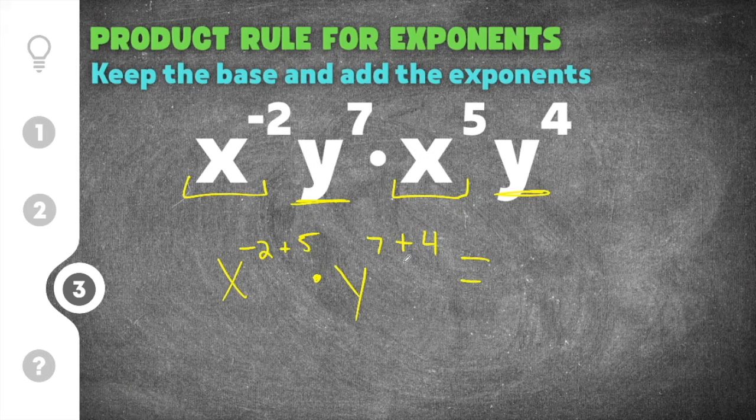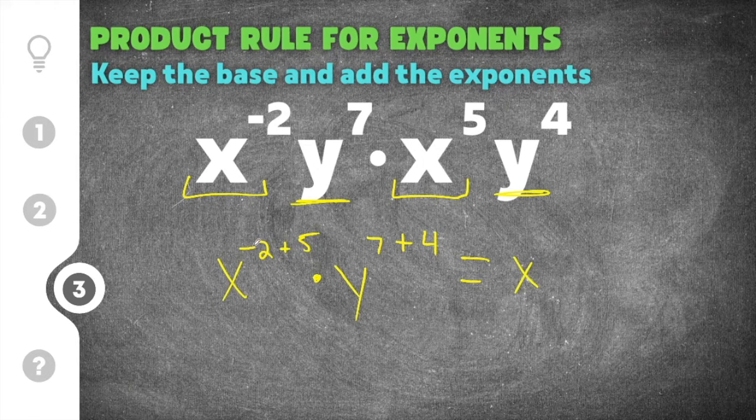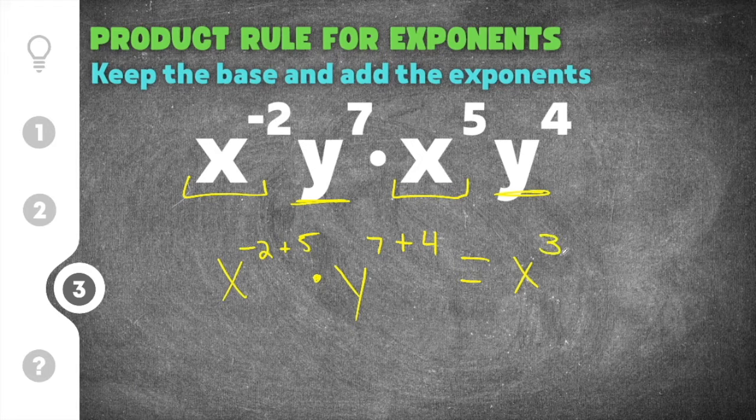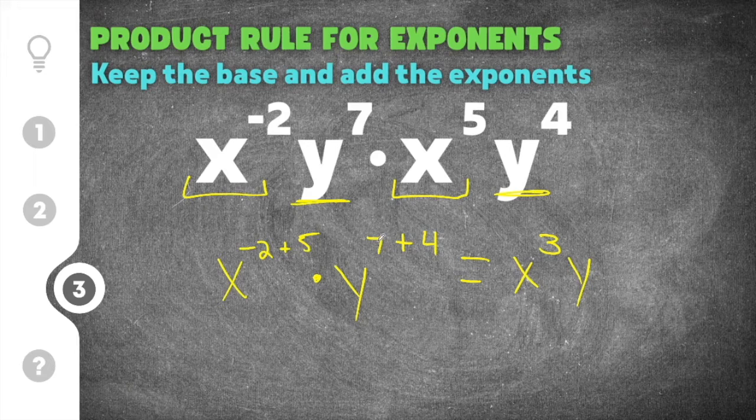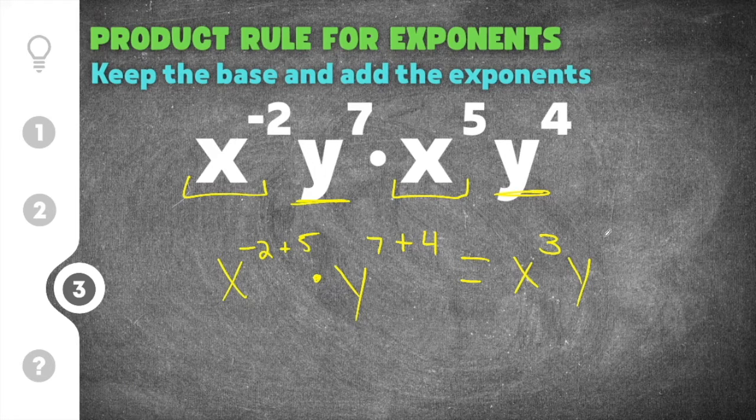So we keep the base the same, so we're going to keep our x. Our exponents are negative two plus five, which is going to be three, and that's going to be times y, and that exponent is going to be seven plus four, which is eleven.